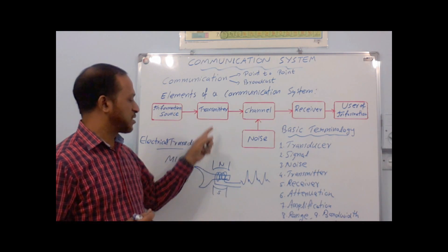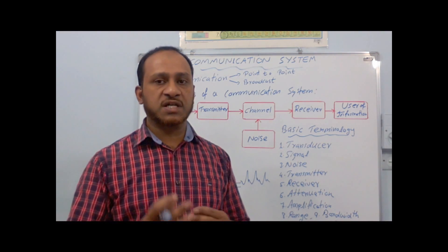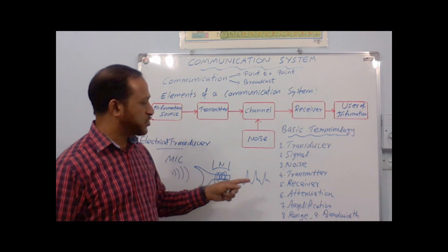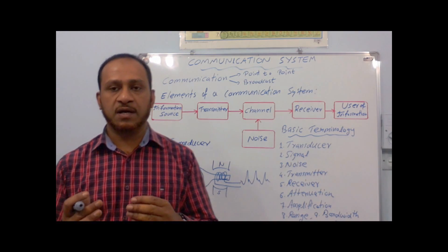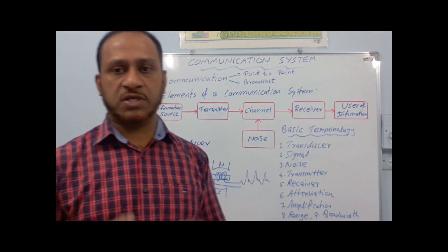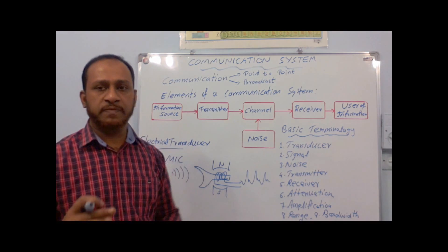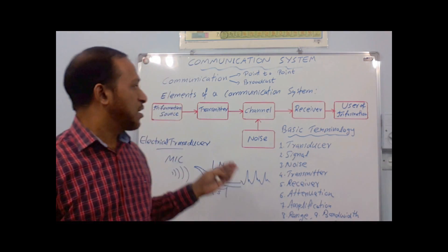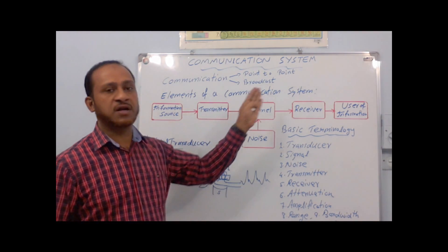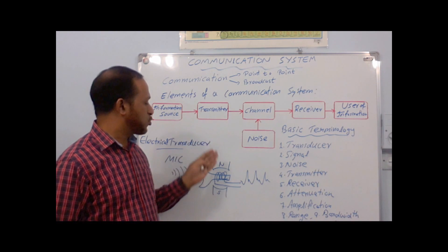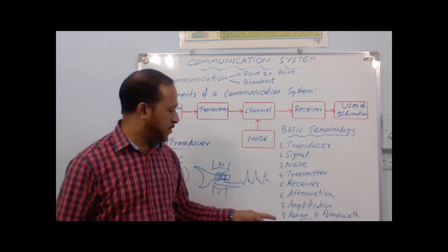So the first component of a transmitter will be a transducer. It converts the information — which can be in the form of sound or a visual — into an electrical signal. This signal cannot be transmitted directly as it is, because when it is travelling through the channel, its energy can be absorbed by the channel and it cannot reach a far distance. So we have to superimpose this message signal on a high-frequency carrier wave. That process is called modulation.